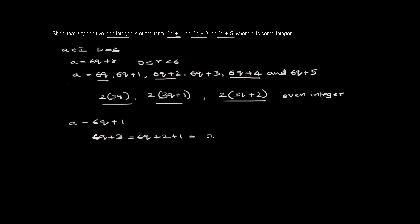This becomes 2 multiplied by 3k plus 1 plus 1. The whole integer, we are getting a 1 as a remainder.